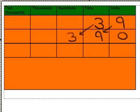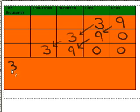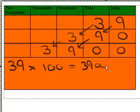A hundred is ten times ten. So if we multiply by ten again, then we will get thirty-nine times a hundred. The nine moves along another column into the hundreds column, and the three moves along another column into the thousands column. So altogether we get three thousand nine hundred. We can say that thirty-nine times a hundred is three thousand nine hundred.